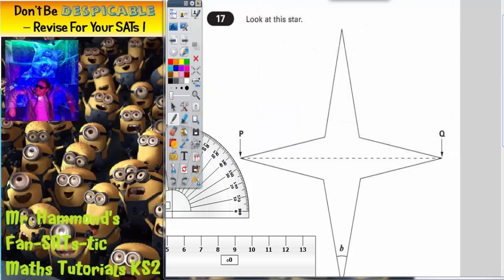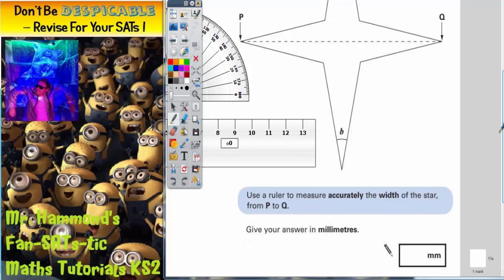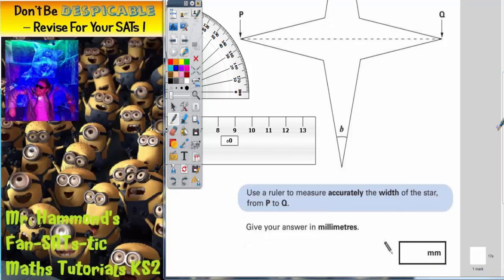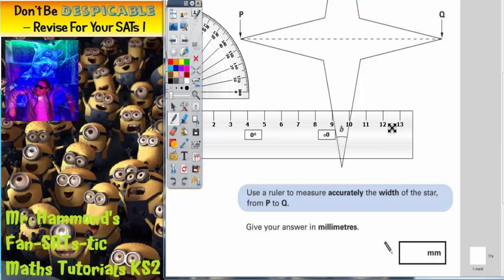Question 17. Look at this star. It says use a ruler to measure accurately the width of the star from P to Q. Give your answer in millimeters.